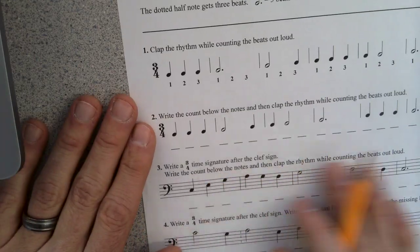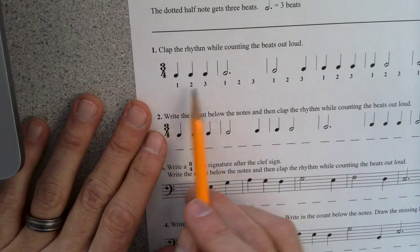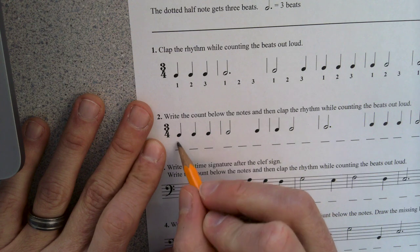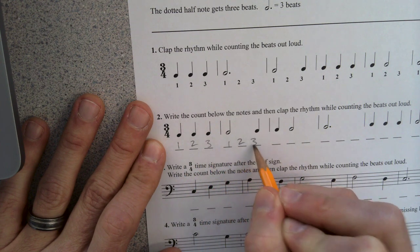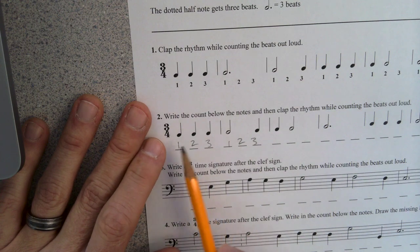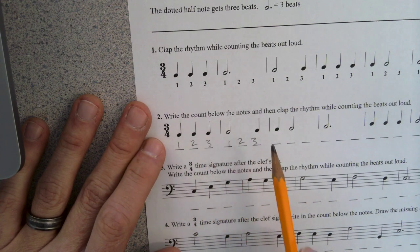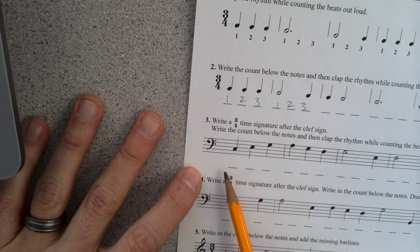This is really similar to the one that you did before, but instead of counting to four, you're going to count to three. One, two, three, one, two, three. So it's one, two, three, one, two, three, one, two, three for the rest of the thing. And same thing here. One, two, three, one, two, three, one, two, three.